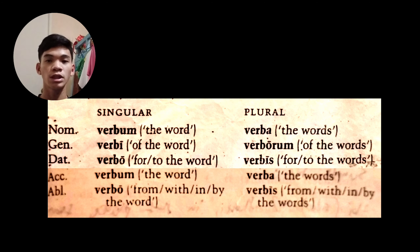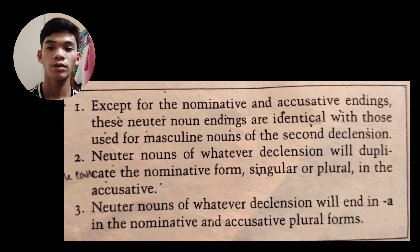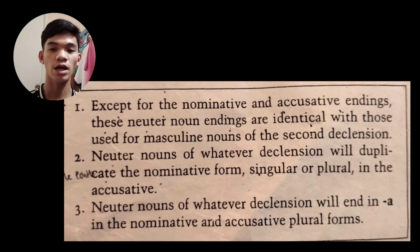Now let us translate into English. For singular: verbum means 'the word,' verbi means 'of the word,' verbo means 'for or to the word,' verbum means 'the word,' and verbo means 'from, with, in, by the word.' For plural: verba means 'the words,' verborum means 'of the words,' verbis means 'for or to the words,' verba means 'the words,' and verbis means 'from, with, in, by the words.'